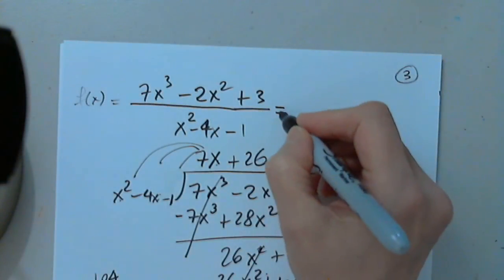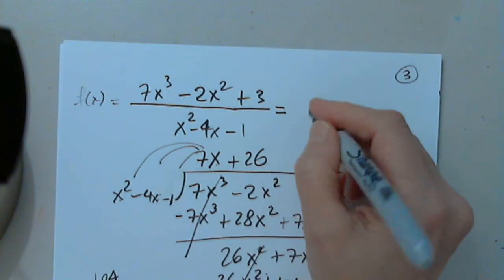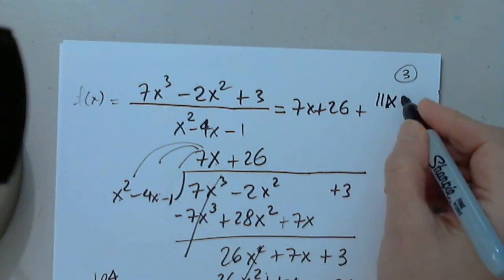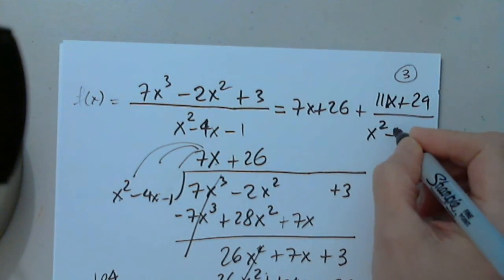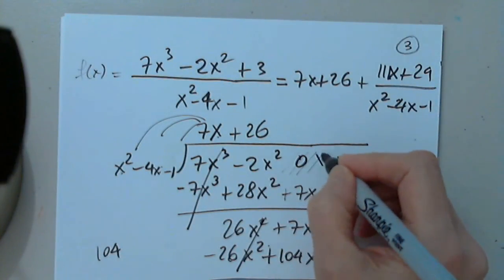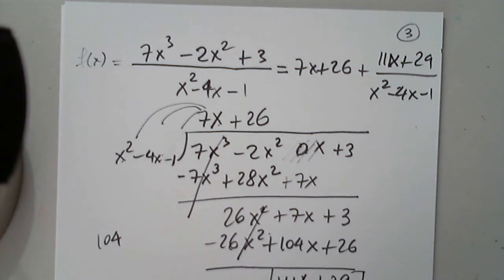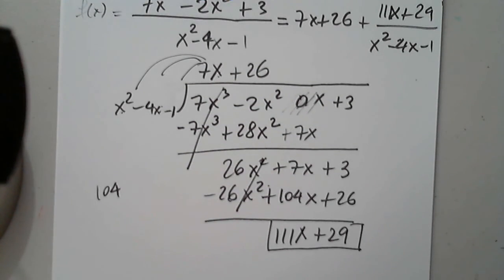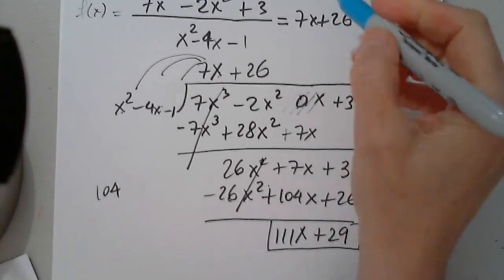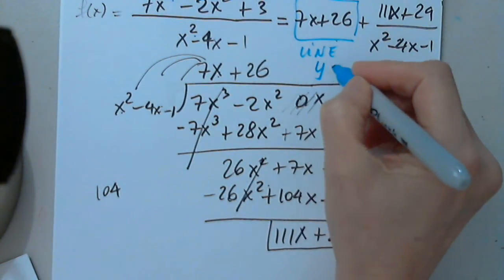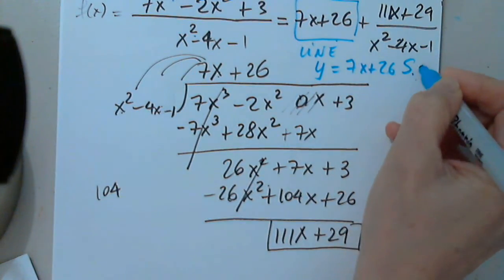So, here I can write equals the quotient, I'm sorry, the quotient, plus the remainder of the divisor, plus 111x plus 29 over the divisor, x squared minus 4x minus 1. Every time, yes, in some books, it's 0x. I don't care for 0x, but if it helps you put 0x in there, that's fine too. I think it's confusing, but if you're used to it, I'm happy with it. So, the slant asymptote is only the quotient. It's a line. It has to be a line. We divide degree 3 by degree 2. We always get a line, and this is y equals 7x plus 26 is the slant asymptote.